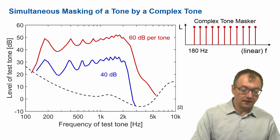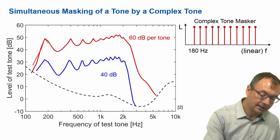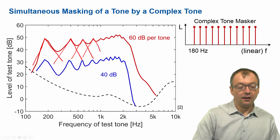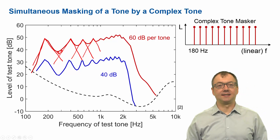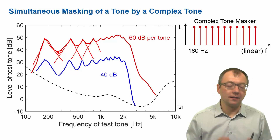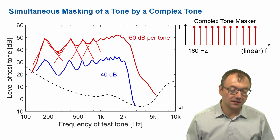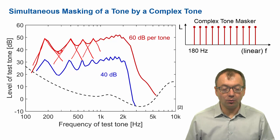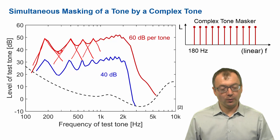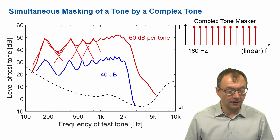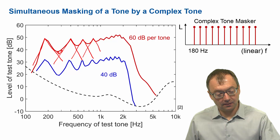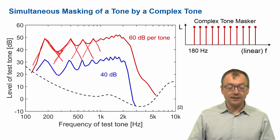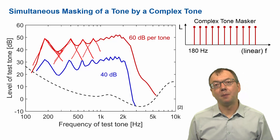What you see here is the masking pattern for the complex tone as a sum of the masking patterns from the individual contributors. You also see that in this region here there is a bit more masking — you cannot listen into the spectral gap as well as if you considered only the individual masking patterns. So there is a bit more masking in those valleys. But overall, particularly at low levels and low frequencies where the spacing of the tone complexes is relatively large compared to the critical bands, masking is really determined by individual components with individual peaks and the ability to detect signals in between those frequencies.